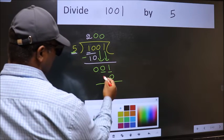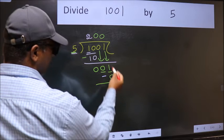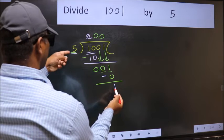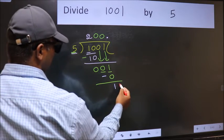Now we should subtract 1 minus 0, 1. Over here we did not bring any number down. And 1 is smaller than 5.